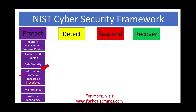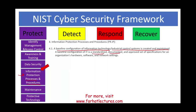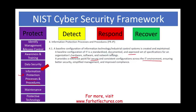A baseline configuration of IT and any industrial control system must be created and maintained. A baseline configuration is a standardized, documented, and approved set of specifications for an organization's hardware, software, and network settings. It creates a reference point for secure and consistent configuration across the IT environment, ensuring better security, simplified management, and improved compliance. Simply put, all your systems — hardware, software, and network — should all work together, and that should be documented. This is what we call baseline configuration: starting from a good position.